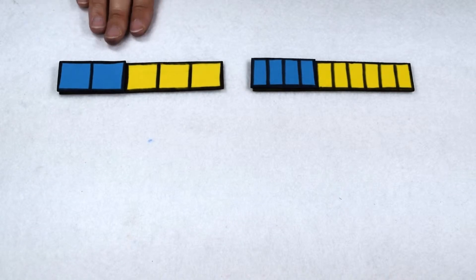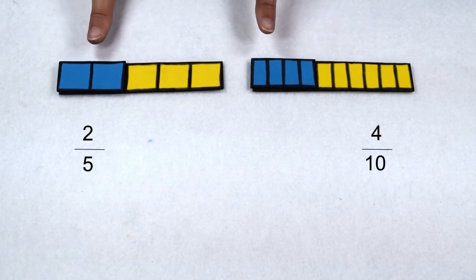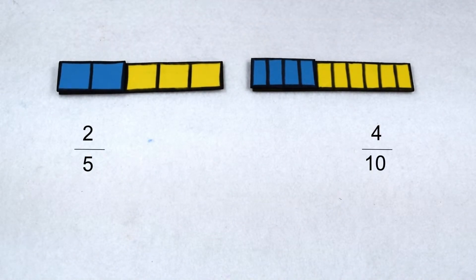Let's try one more example where we compare 2 fifths to 4 tenths. Looking at our fraction bars, we can see that they're pretty close in value, but let's go ahead and make our equivalent fractions to make sure.